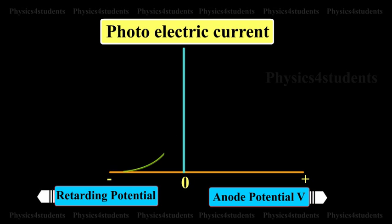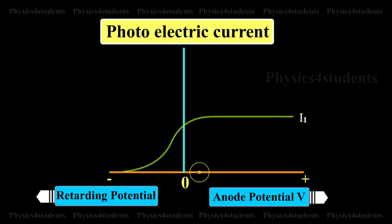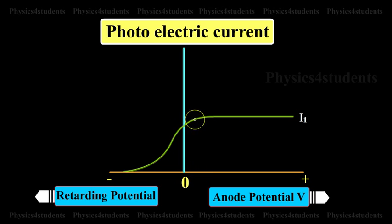The animation shows the variation of photoelectric current with the potential difference V between the two plates. When the positive potential of A is increased, the photoelectric current is also increased.